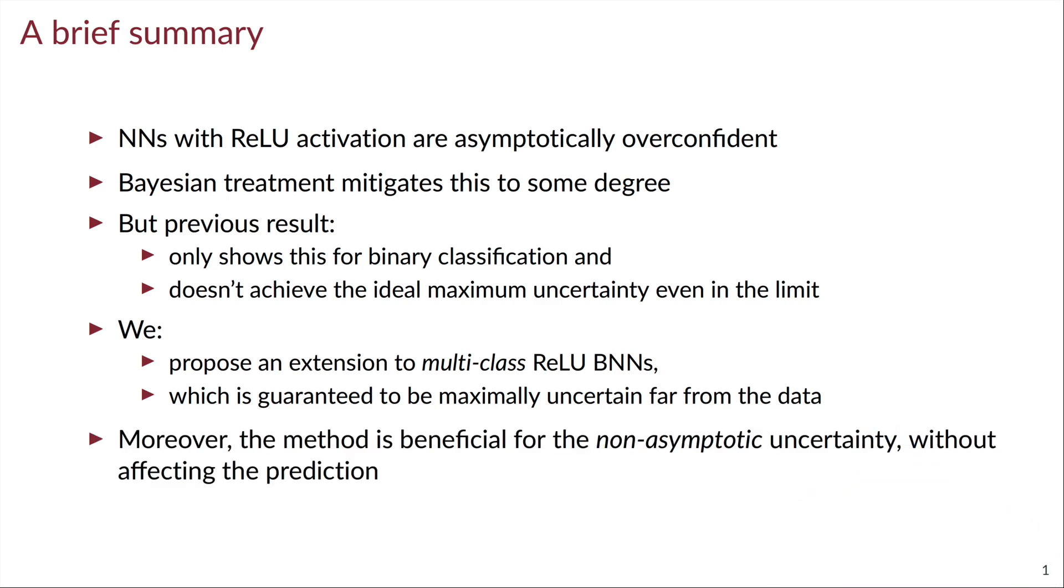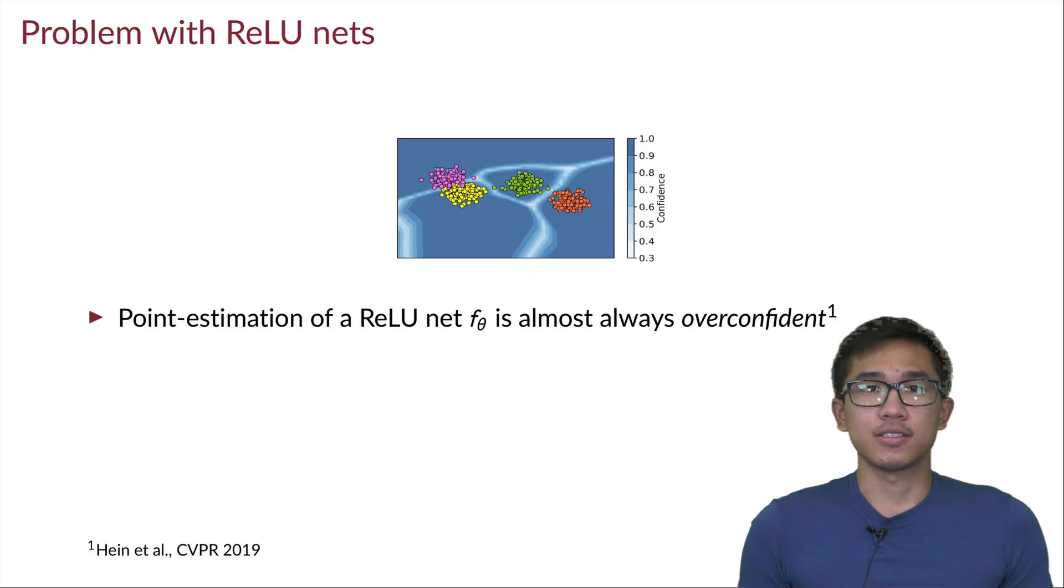Furthermore, this method can also be extended further so that it can yield better uncertainty quantification in the non-asymptotic regime. Okay, let's go much deeper into the topic. So suppose we have a ReLU network f_θ and then we do a MAP estimation on the parameter.